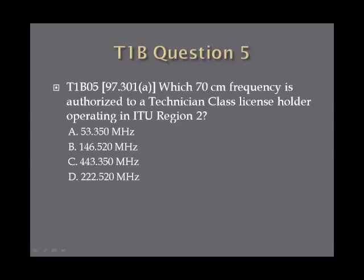Question 5. Which 70-centimeter frequency is authorized to a technician class license holder operating in ITU Region 2? A. 53.35 MHz. B. 146.52 MHz. C. 443.35 MHz. Or D. 222.52 MHz.